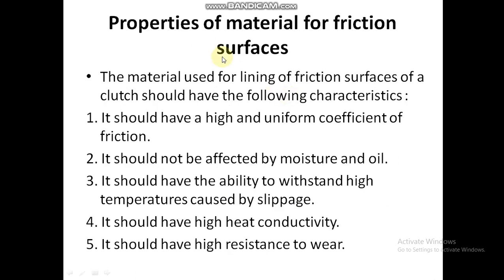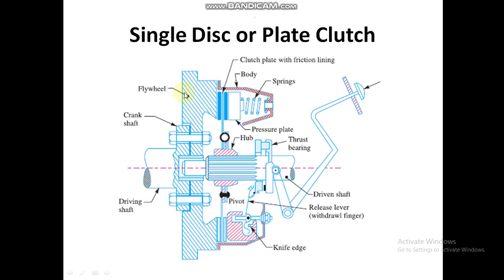Properties of material for clutch surfaces: it should have a high and uniform coefficient of friction; it should not be affected by moisture and oil; it should have the ability to withstand high temperature caused by slippage; it should have high heat conductivity; and it should have high resistance to wear.